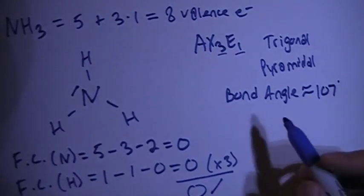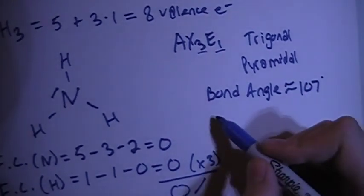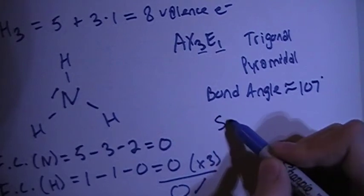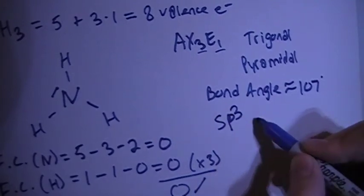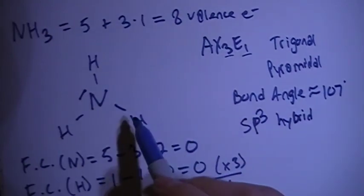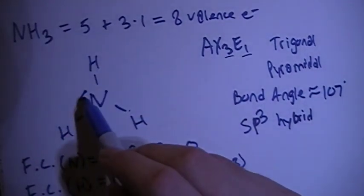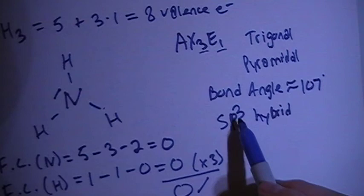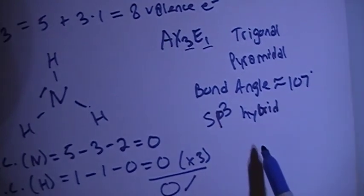Okay, and in terms of hybridization, this is going to have an SP3 hybridization because there's 1, 2, 3, 4 bonding sites, S and 3 Ps. So that's 4 hybrid orbitals.